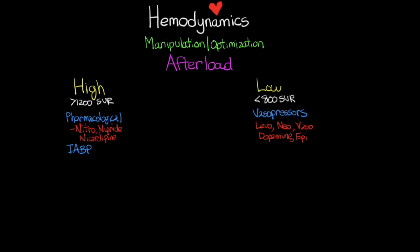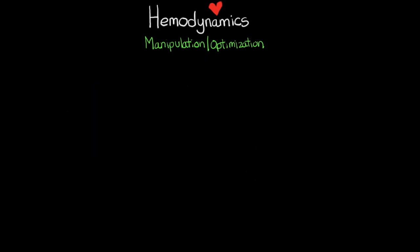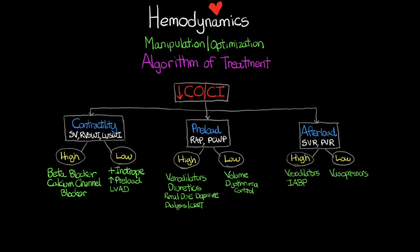That covers everything on optimization of afterload. The last thing I want to bring up is the algorithm of treatment for hemodynamics. This gives you a quick algorithm to determine what component of cardiac output is deficient and, based on whether that component is high or low, what the treatments are. This concludes not only this lesson but this entire series on hemodynamic principles. I really hope this provided much-needed information to improve your practice and the care you provide for your patients.